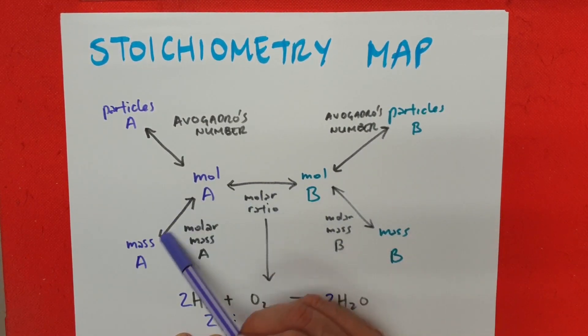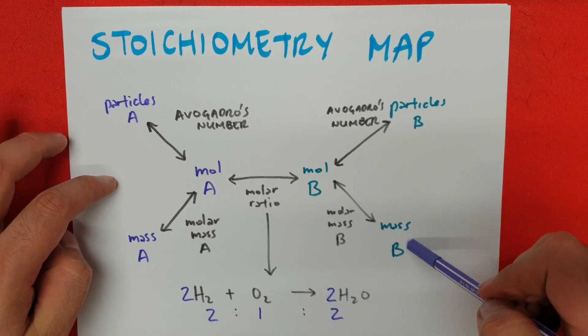Then there are other problems like mass of a substance to moles of another substance. Moles of another substance to mass of another substance, particles of a substance to mass of another substance, particles of another substance. So B and A are different substances and we can convert from any point on the map to the other points.